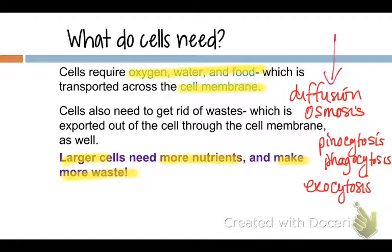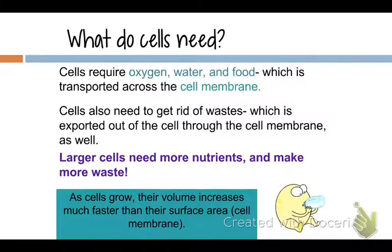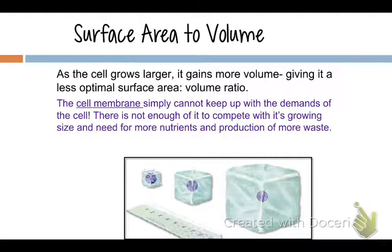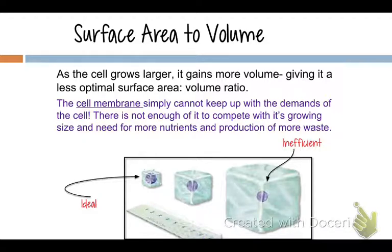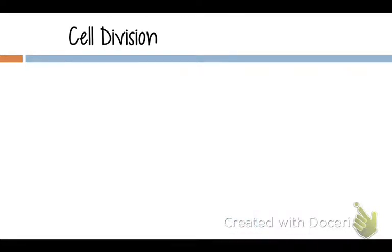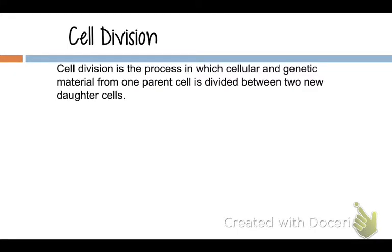A cell cannot keep growing. At some point it's going to have to divide. When the cell divides, it's going to reduce the surface area to volume ratio. A smaller cell becomes the ideal — that's why we're made up of several trillion cells. Cell division is just a process of dividing cellular and genetic material from one parent cell between two new daughter cells.